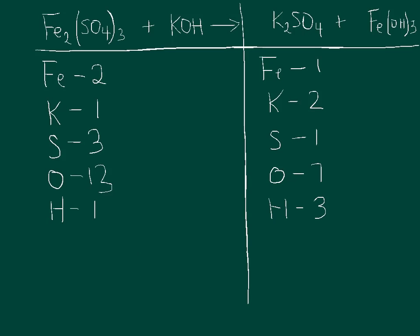Let's work through these steps, starting with the metals. I have iron and potassium — let's start with iron. Right now I have two irons on the reactant side and one iron on the product side. To balance an equation, I can add coefficients in front of any formula. A coefficient multiplies that whole formula by that number. I cannot change the subscripts — those are permanent. I can only add coefficients.